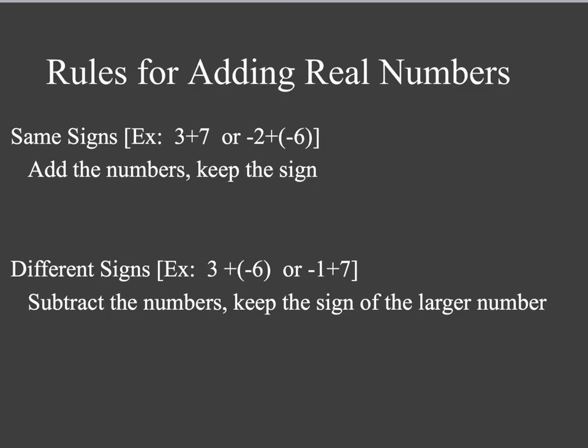So something like this, 3 plus 7, we add the numbers, that's 10. They're both positive, so we keep it positive 10. Here, we add the numbers, 2 plus 6 is 8. The same signs, we keep that sign, so it's negative 8.